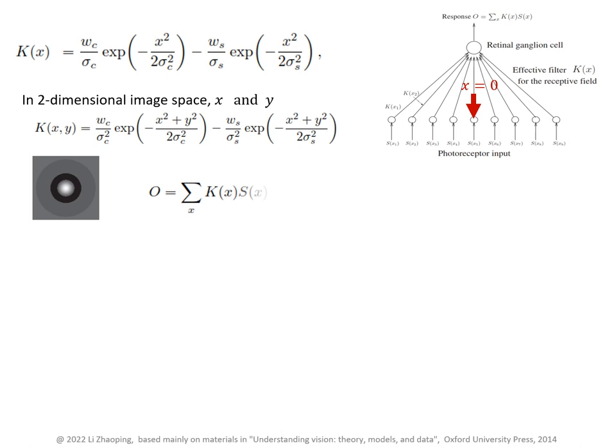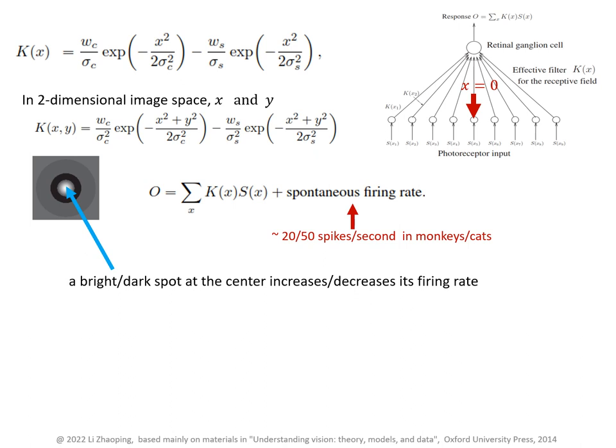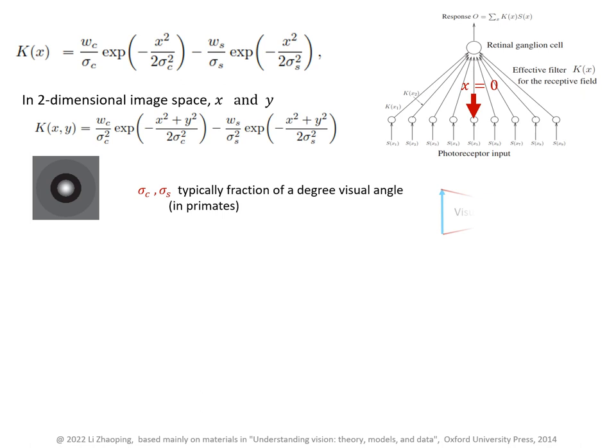Turning on or turning off a neuron actually means to increase or decrease its firing rate, because each neuron has a spontaneous activity level when there is no visual input so that the whole visual field has a uniform luminance. So for this neuron, a bright or a dark spot at its center will increase or decrease its firing rate from this spontaneous level. In either case, a neuron's firing rate is informative about the visual input.